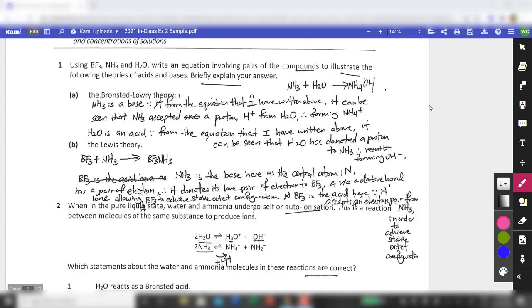I'm going to use one of your classmate's work to debrief class exercise 2. So right now let's look at 1A. You are actually asked to choose from the list given to illustrate two theories. For 1A, it will be Bronsted-Lowry theory.